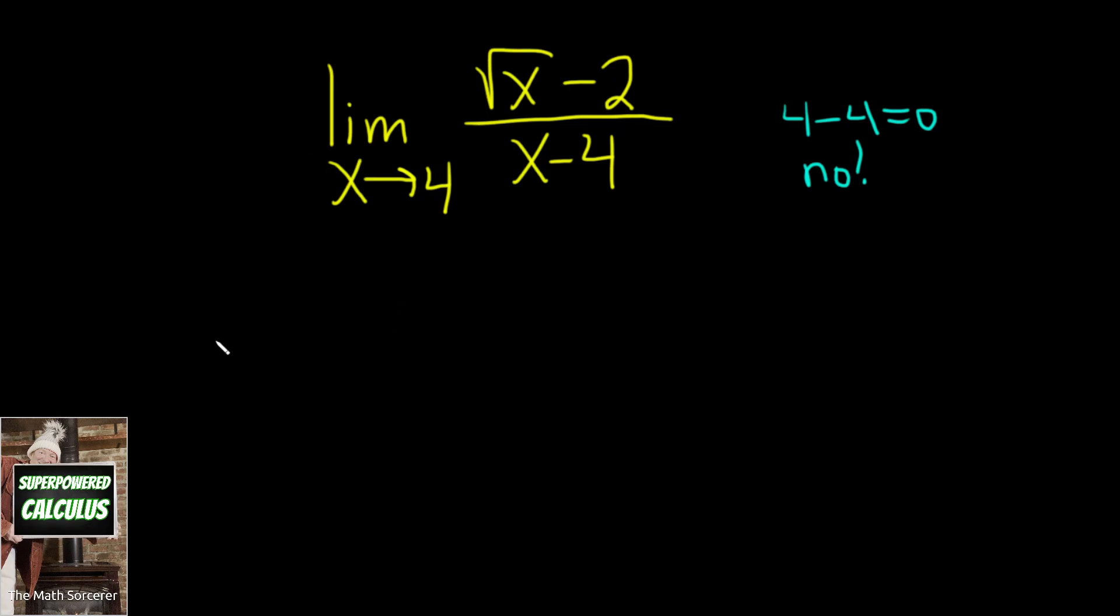So instead we have to do something else. Let me show you what that something else is. So I'm going to rewrite it again over here. We have the limit as x approaches 4 of the square root of x minus 2 over x minus 4.